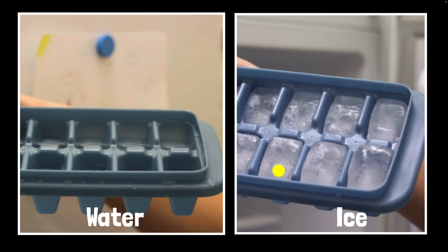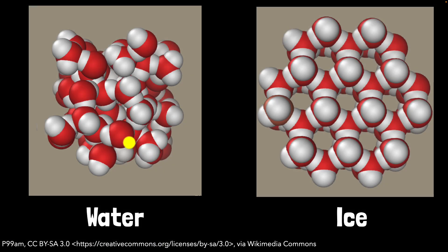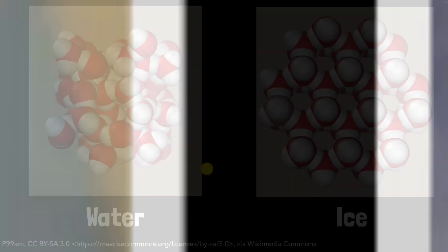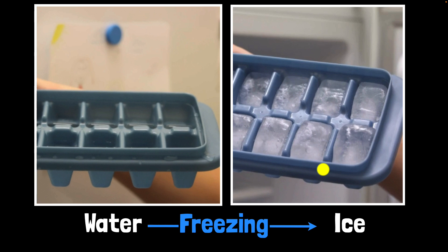But if you could zoom in all the way to the molecular level, we see that in both cases we have H2O molecules. The difference is that they're arranged differently. But the identity has stayed the same. It is H2O. So zooming out, water freezing to ice is a physical change.